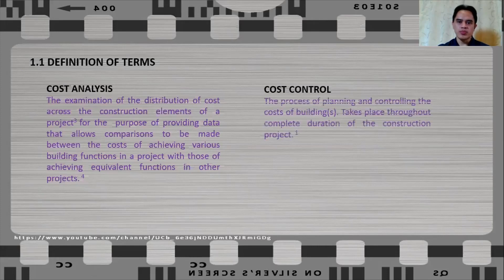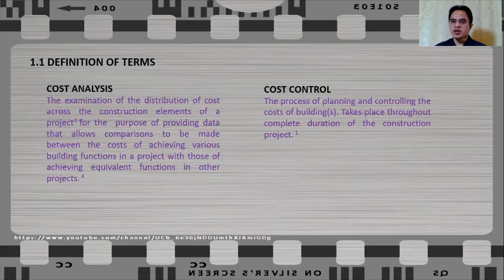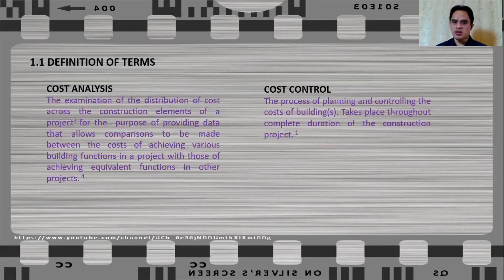Cost control is the process of planning and controlling the cost of buildings or a construction project as a whole, and it takes place throughout the complete duration of the construction project. Cost control will start from the time you already have your approved budget all the way throughout the completion of your construction project.